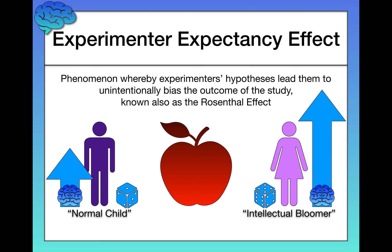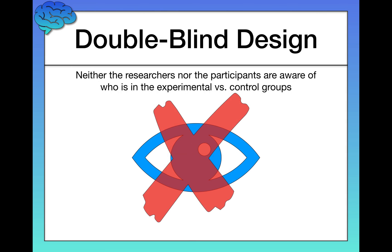This same bias happens in research: if we know who's getting the placebo and who's getting the real medication, we may treat those two groups a little differently — giving better overall care or treating more positively those we know have the actual medication. To guard against this, we use a double-blind design, in which neither the researchers nor the participants are aware of who is in the experimental versus the control group. If you don't know who's in which group, you can't unintentionally bias the results.